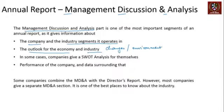In certain cases, you can also find data around government regulations in the MD&A. Some companies also provide something like a SWOT analysis — Strengths, Weaknesses, Opportunities, and Threats — for themselves. Some companies actually do that analysis for the sake of their stakeholders, and it is available in the MD&A section. Finally, the performance of the company and the data surrounding that is also discussed in the MD&A.